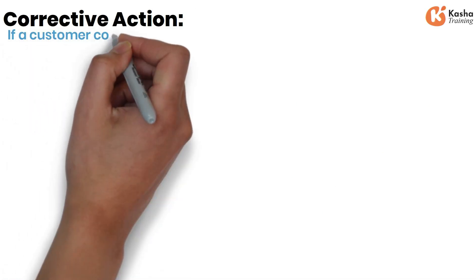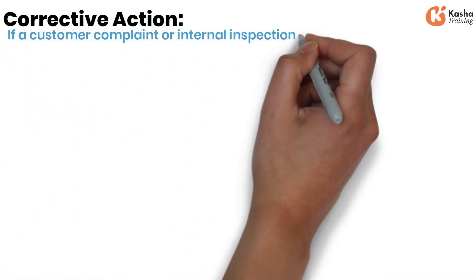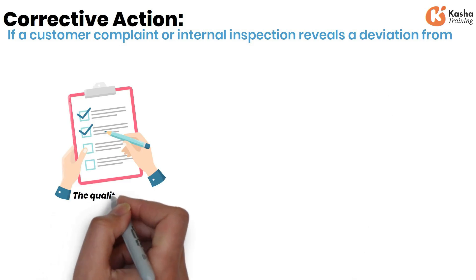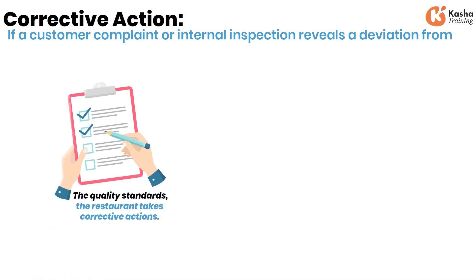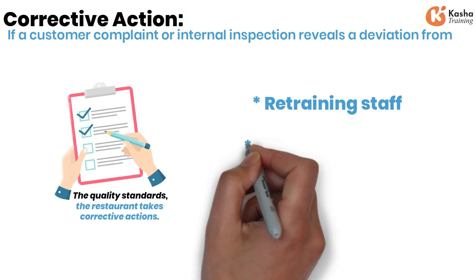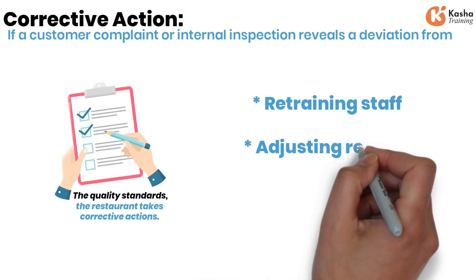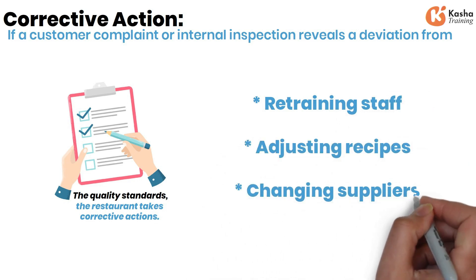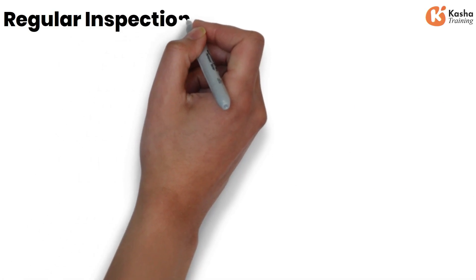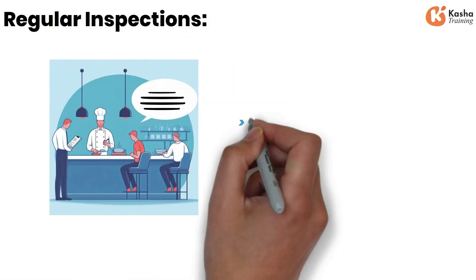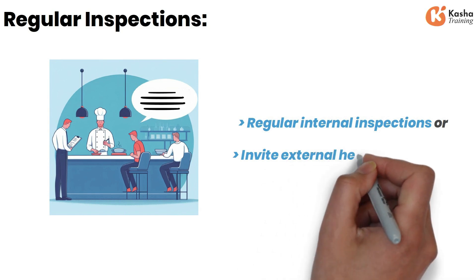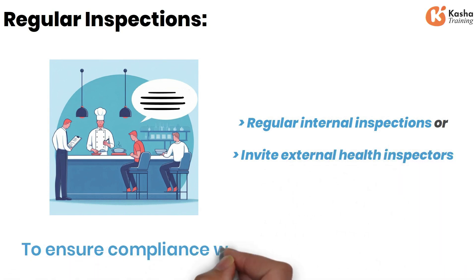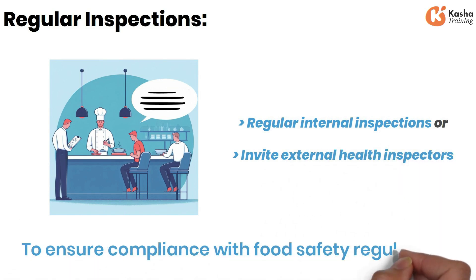Corrective Action: if a customer complaint or internal inspection reveals a deviation from the quality standards, the restaurant takes corrective actions. This might involve retraining staff, adjusting recipes, or changing suppliers. Regular Inspections: the restaurant may schedule regular internal inspections or invite external health inspectors to ensure compliance with food safety regulations.